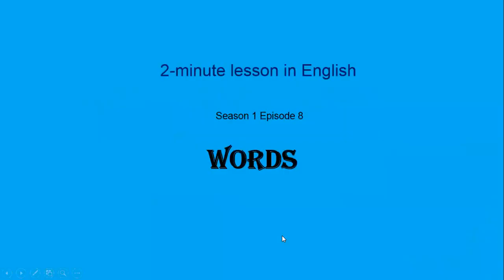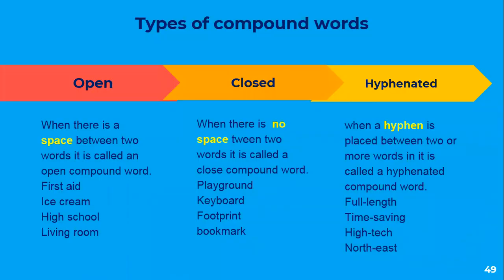We have something more interesting about words. There are three types of compound words. Open compound words, where there is a space between the two words. The second is the closed compound words, where there is no space between the words. And the third category is the hyphenated compound words.